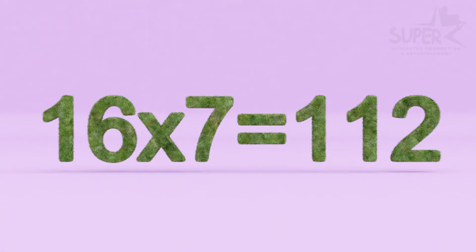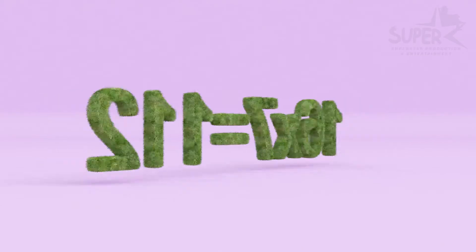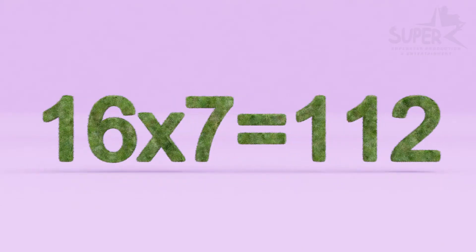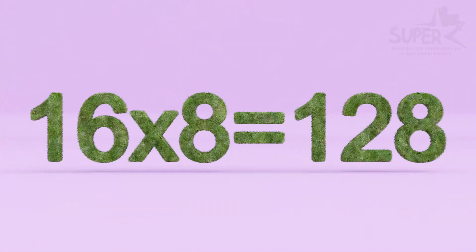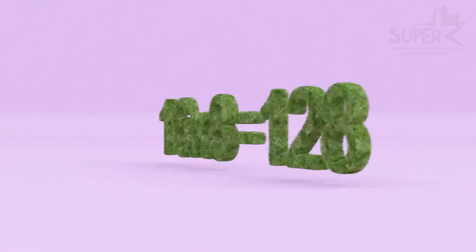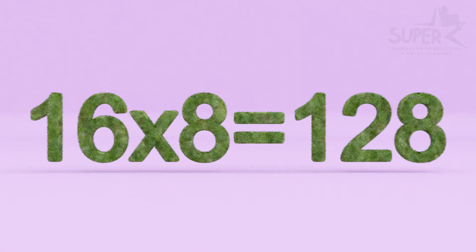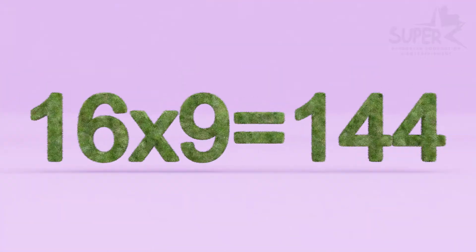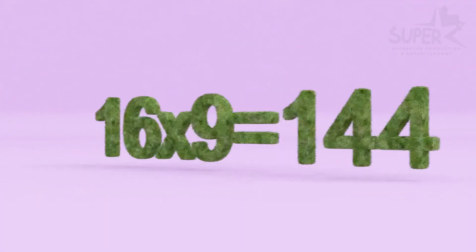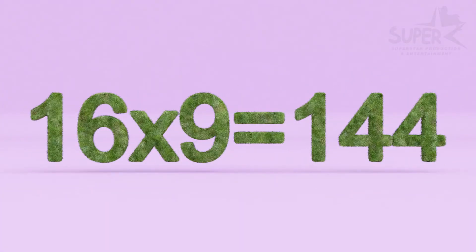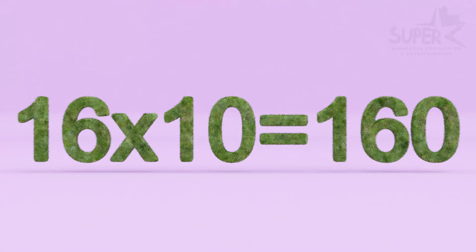16 Sevens are 112. 16 Eights are 128. 16 Nines are 144. 16 Tens are 160.